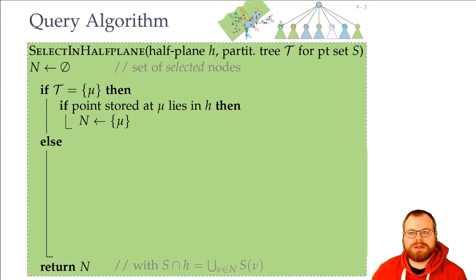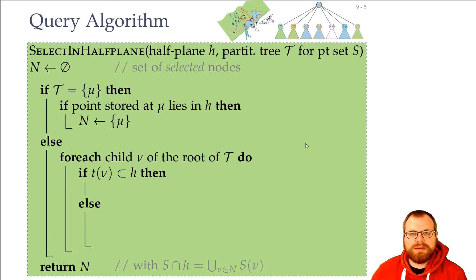Otherwise, we are in this situation here, and we look at each of the children of the current node. And for each of them, we figure out: does it completely lie inside the half-plane? If yes, then we have to select it, so we add it to the set N.